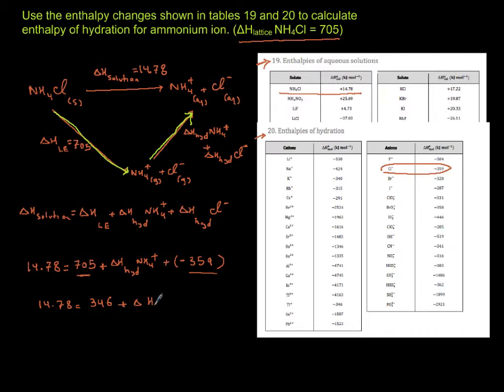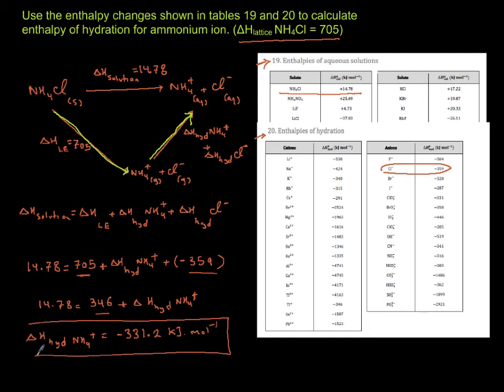Now I take this quantity to the other side of equality. So Delta H hydration of ammonium should be exothermic, and it is, and it's this value in negative: negative 331.2 kilojoules per mole. So sometimes information is missing and you need to bring it back to life.